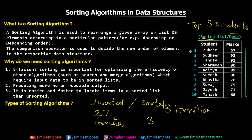In the unsorted scenario you required 27 iterations, whereas in the sorted scenario you only need the first three positions — no iterations at all. You can also easily read that Zohair is first, Sudhir is second, and Tanmay is third. In a real-world scenario with hundreds or thousands of students across different batches, a sorted list makes it much easier to find the topper or the lowest scorer. This is why sorting algorithms are very important, and other algorithms also work on sorted data in a much more efficient way.